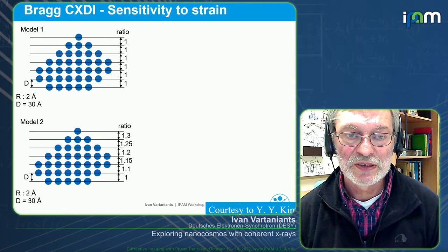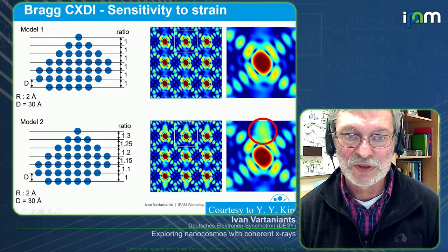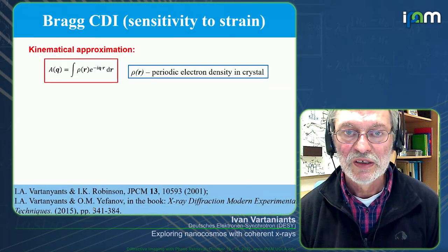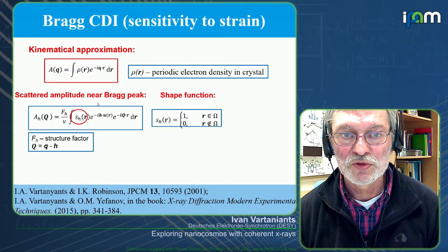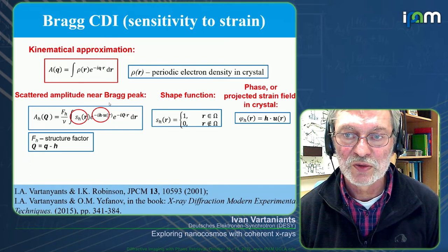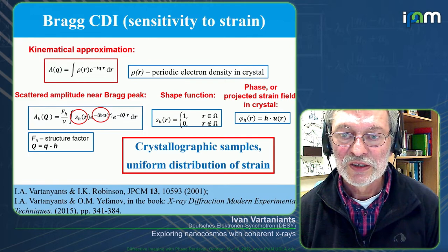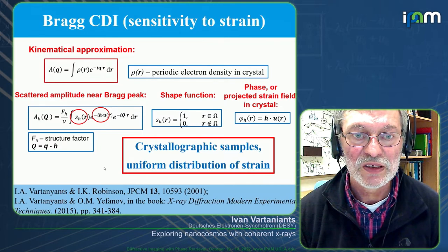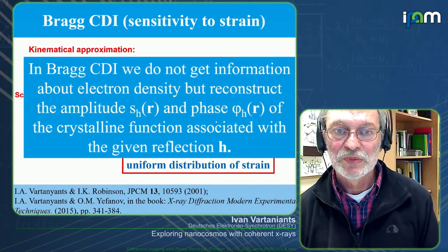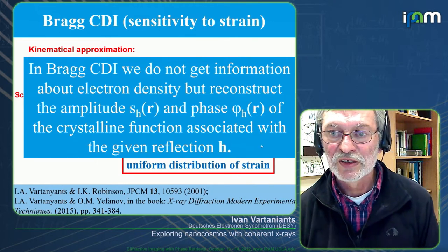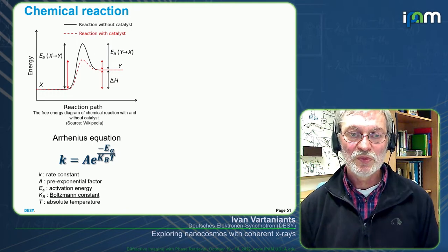Now in Bragg CDI we have sensitivity to strain. You can see additional intensity coming from a slightly shifted lattice. An important point: we have a shape function and a strain phase factor — the projected strain field in the crystal. For crystallographic samples we get a uniform distribution of strain. In Bragg CDI we do not get information about electron density but reconstruct the amplitude and phase of the crystalline function associated with the given reflection — that's very important.